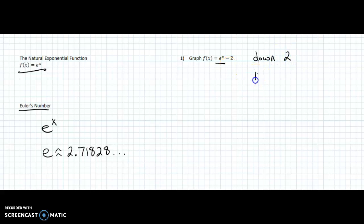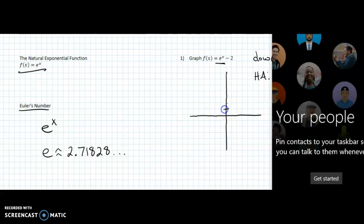This also has a horizontal asymptote at 2. Or sorry, at negative 2. And we can plot out this graph. So just like any other exponential function.